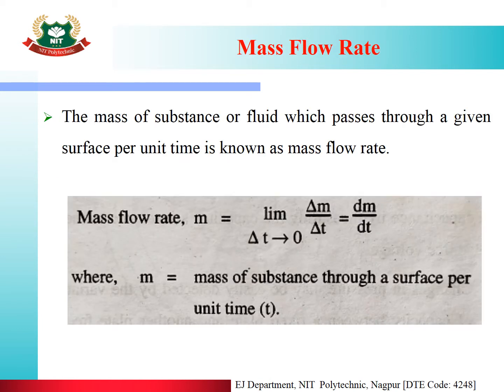Mass flow rate: the mass of substance or fluid which passes through a given surface per unit time is known as mass flow rate. The formula is: ṁ = lim(Δt→0) Δm/Δt = dm/dt, where m is the mass of substance passing through a surface per unit time t.